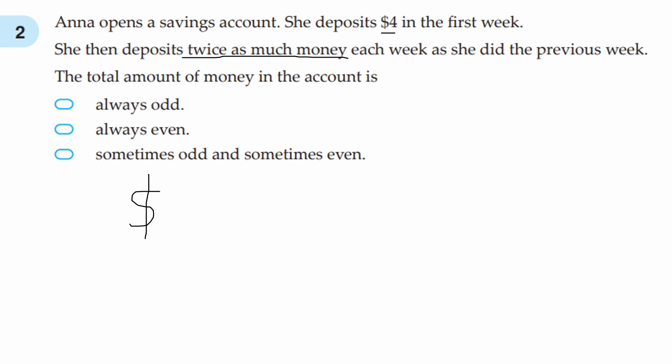First she deposits 4 dollars, then she deposits 4 times 2, which is 8 dollars. Then she deposits 8 times 2, which is 16 dollars. And so on. 4 plus 8 is 12 dollars, and 12 dollars plus 16 dollars is 28 dollars. Those numbers are all even, so it looks like the answer is B, always even.